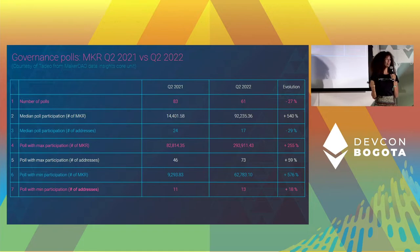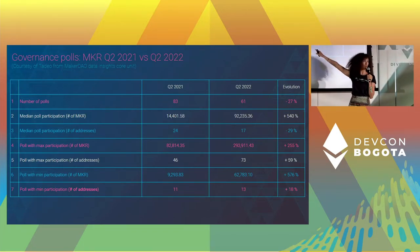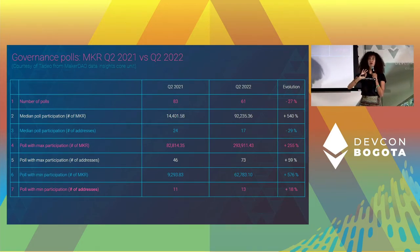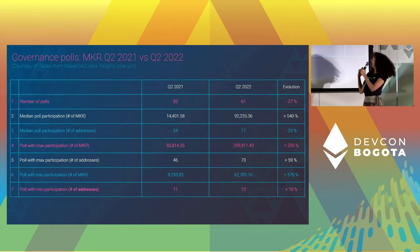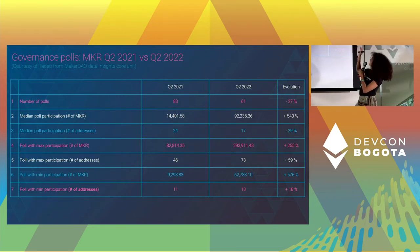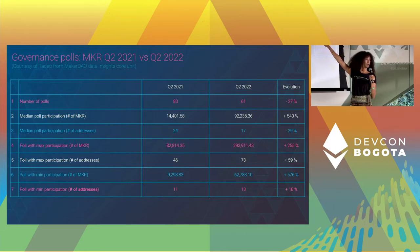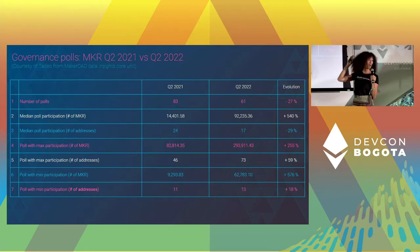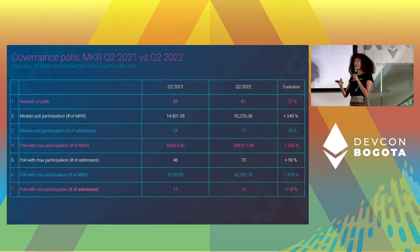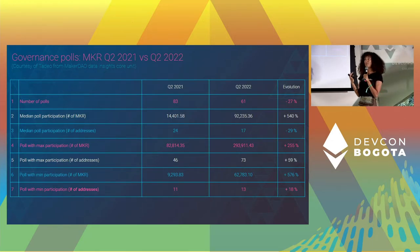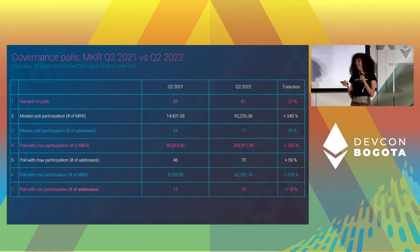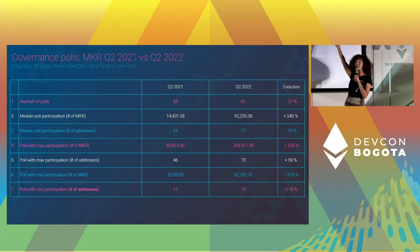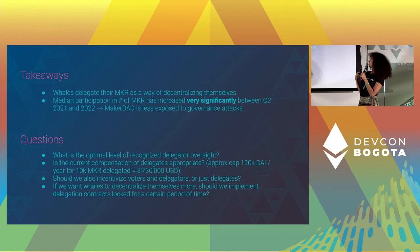Now that we know the structure of delegation, let's look at Q2 2021 — the quarter right before delegation was introduced in July–August 2021 — and compare it with Q2 2022, one year later. What's really interesting is that in terms of median poll participation by number of Maker tokens, there's an increase of 540%. That means way more Maker tokens are put on average into every vote. It's therefore much harder to commit a governance attack — it's much more difficult when there are 92,000 Maker tokens in a vote than when there were only 14,000.